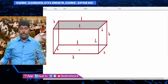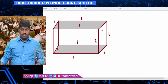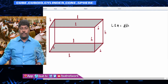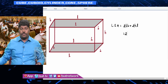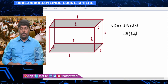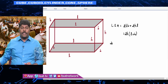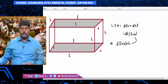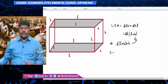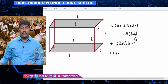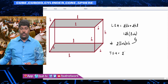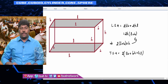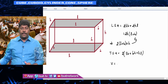The top and bottom surfaces are rectangles of area l×b each. So the total surface area of a cuboid is 2(lb + bh + hl). The volume is simply length × breadth × height = l·b·h, which equals base area (l×b) times height (h).